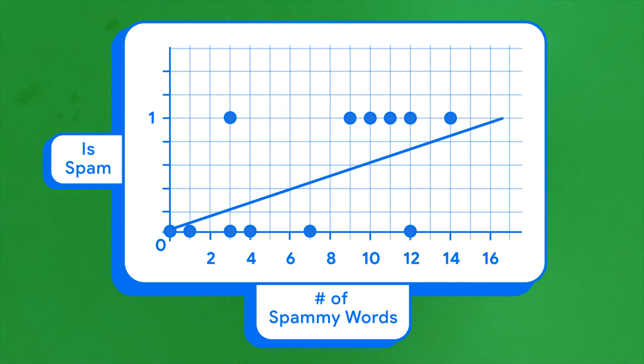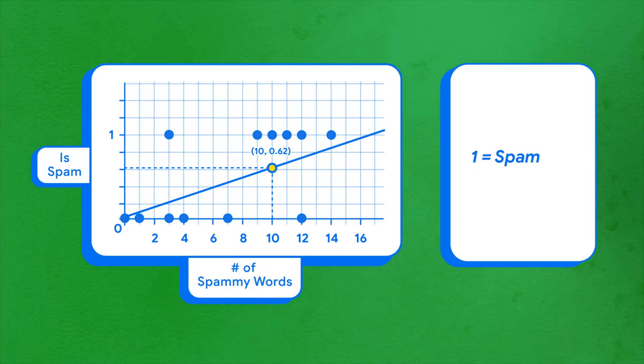Here are the results. Let's say we have an email that contains 10 spammy words. Is it spam? A score of 1 means spam, and a score of 0 means not spam.